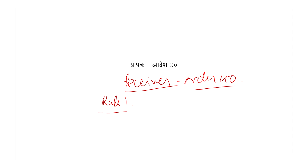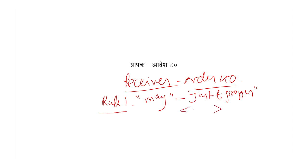Court kabhie bhi receiver ko appoint kar sakti hai — court may, when court thinks it just and proper. Yeh bada wide jurisdiction hai court of law ko. Court may appoint receiver at any point of time, jab court ko lage ki just or proper hai — either before or after the decree. Decree ke pehle bhi aur decree ke baad bhi, kabhi bhi receiver appoint kiya ja sakta hai. Court may at any stage of the proceedings, when court thinks it just and proper, may appoint receiver either before the decree or after the decree.